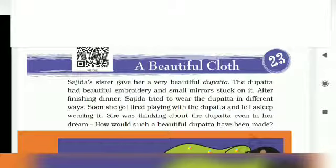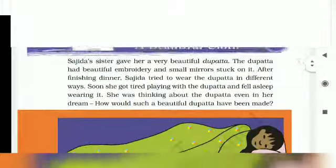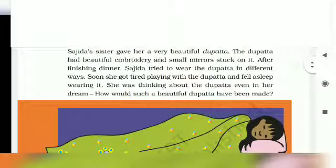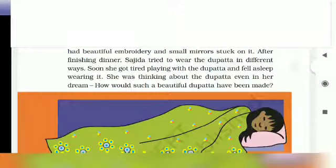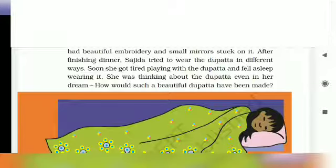Sajda ki aapa ne usse ek bohut sundar dhupatta diya. Dhupatte ke upar sundar karai aur shishe bhi lagay hue thay. Raat ko khaana khaane ke baad, Sajda dhupatta alag-alag tarase aaur pehen kar khilne lagay. Khilte khilte thak gai, toh woh dhupatta aurhe hi so gai. Sapne mein woh sochne lagay — itna sundar dhupatta kiise bana hooga?